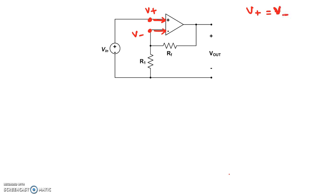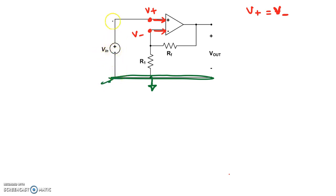Before we start doing analysis on any nodes, we need to choose a reference node. Let's pick a reference node at the bottom of the circuit and call that the ground node. Now, if that node is ground, then because of this voltage source which has a voltage drop of Vin, this particular line is at voltage Vin.